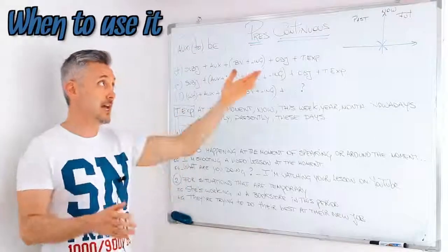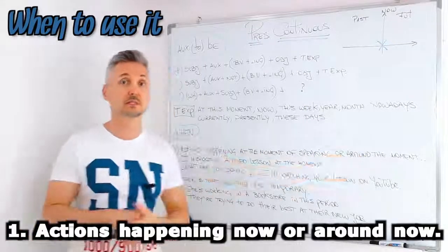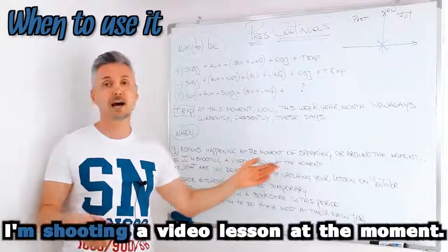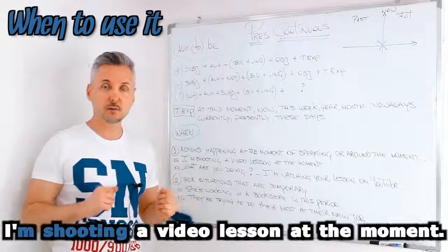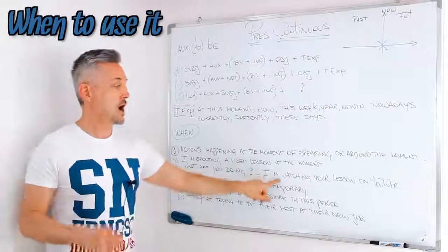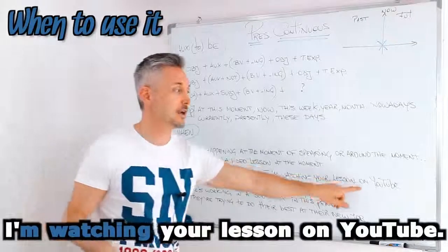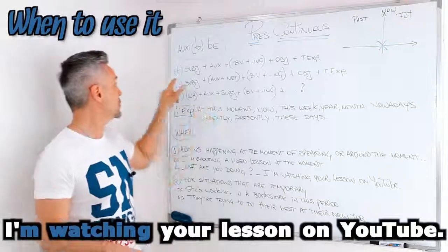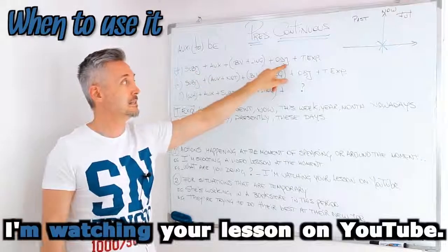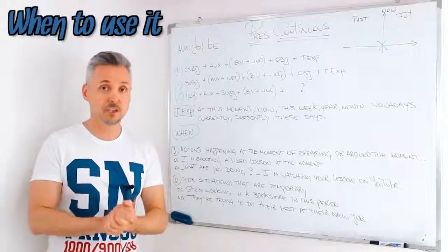When do we use this tense? We use it for actions happening at the moment of speaking or around the moment of speaking. I told you at the beginning: I'm shooting a video lesson at the moment. So I could ask you, what are you doing now? And you might answer — I hope so — I'm watching your lesson on YouTube. So this is a positive sentence: I am watching your lesson on YouTube right now. This is the first usage of the present continuous.